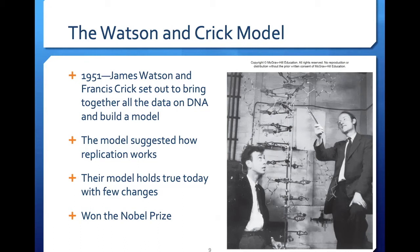As Watson and Crick pointed out in their original paper published in Nature in 1953, they stated: 'It has not escaped our notice that the specific pairing we have postulated immediately suggests a possible copying mechanism for the genetic material.' Watson and Crick ultimately won a Nobel Prize for their constructed model.